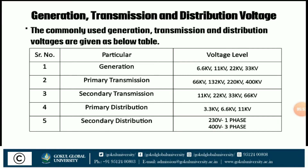Now we discuss about generation, transmission, and distribution voltages. The commonly used voltage levels are: generation voltage is generally 6.6 kV, 11 kV, 22 kV, and 33 kV. Primary transmission voltage is generally 66 kV. Primary distribution voltage is 3.3 kV, 6.6 kV, and 11 kV. Secondary distribution voltage is 230 V for single-phase and 400 V for three-phase.